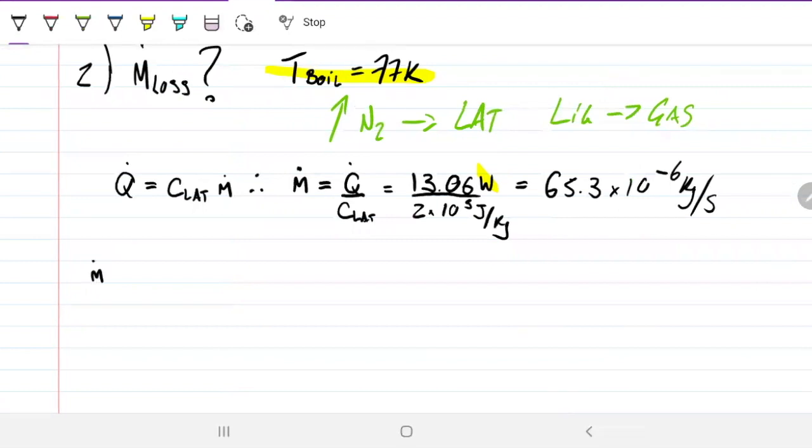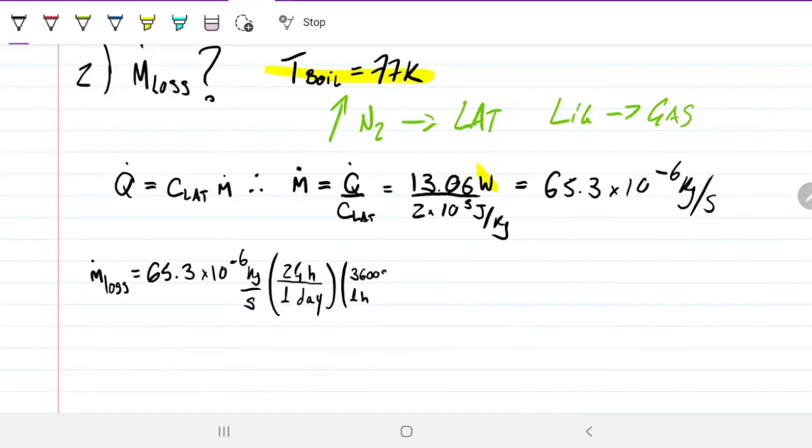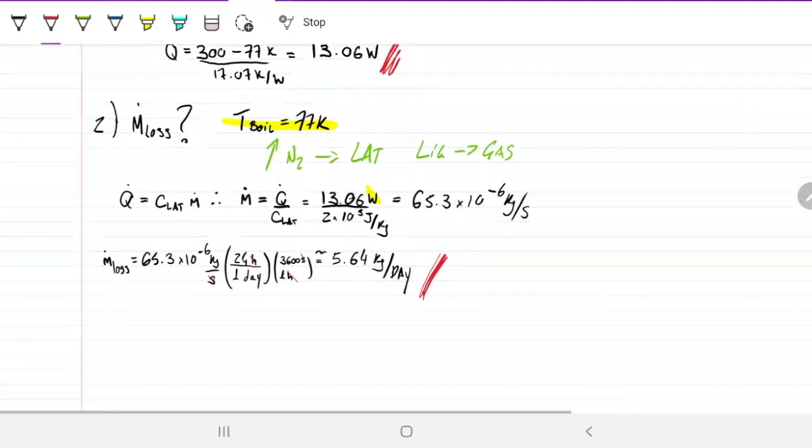The question, however, asks us what is the loss per day. So we just need to do some conversion. If my mass loss is 65.3 times 10 to the minus 6 kilograms per second, and I know that in one day I have 24 hours, and I also know that in one hour I have 3600 seconds, then I can happily get rid of these seconds of these hours and be left with per day, which turns out to be approximately 5.64 kilograms per day. So that would be the amount of mass loss that we'd have per day, just because of the boil off.